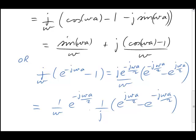Voila! Now, 1 over 2j times the difference of exponentials in the bracket is exactly a sine of ωa over 2, so we get our final result as follows.